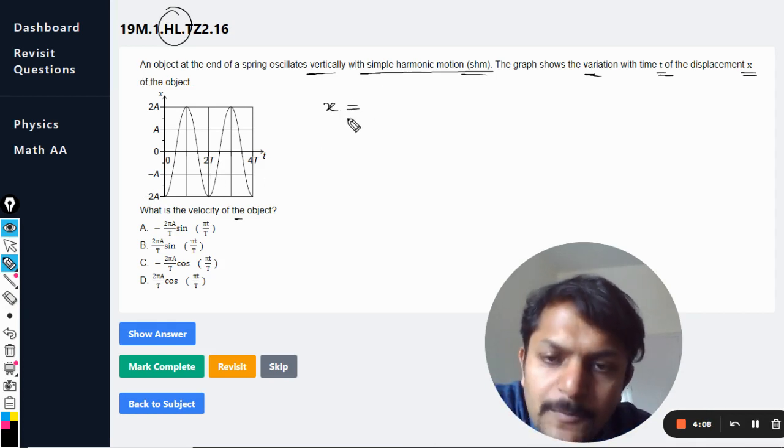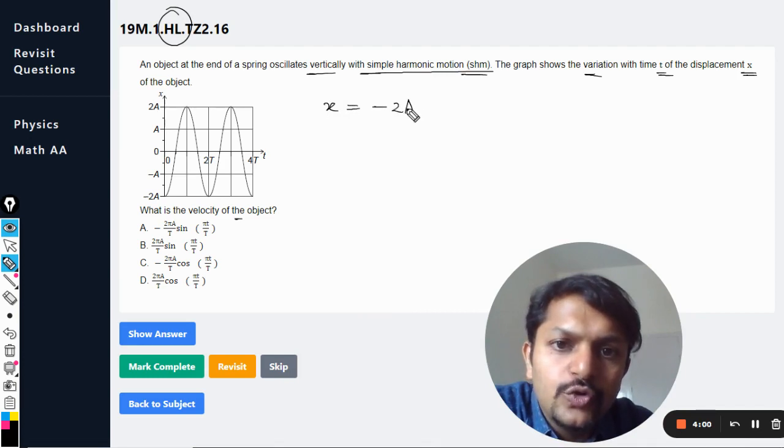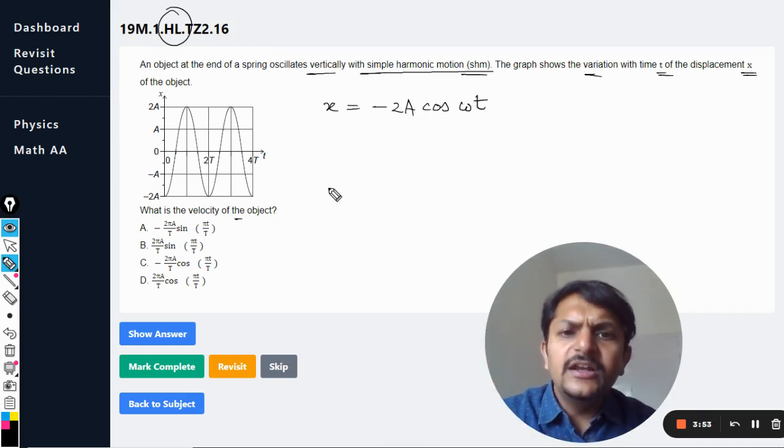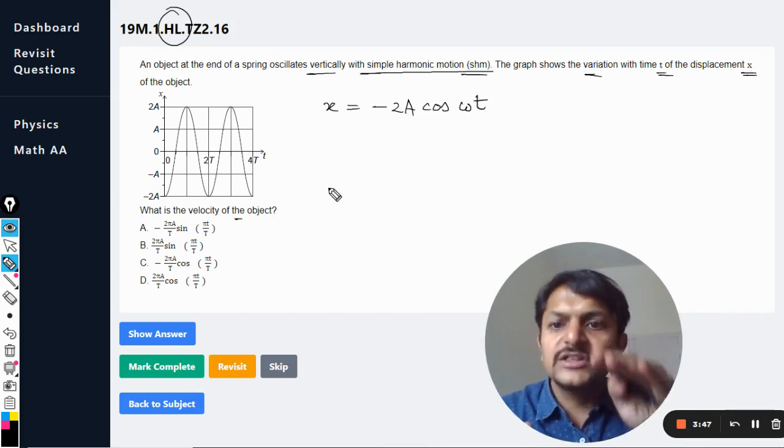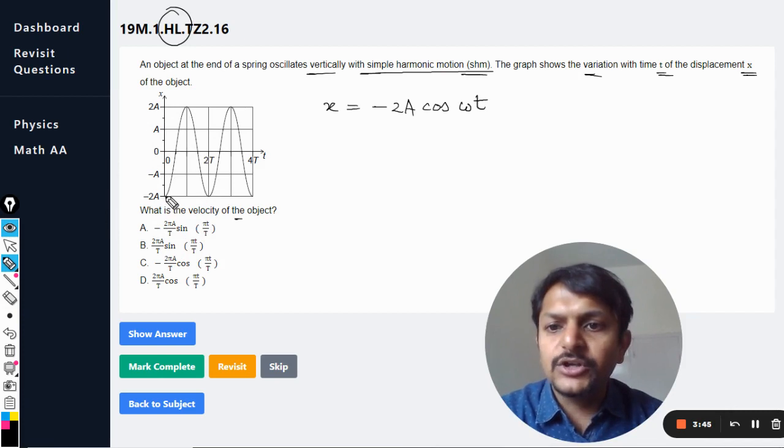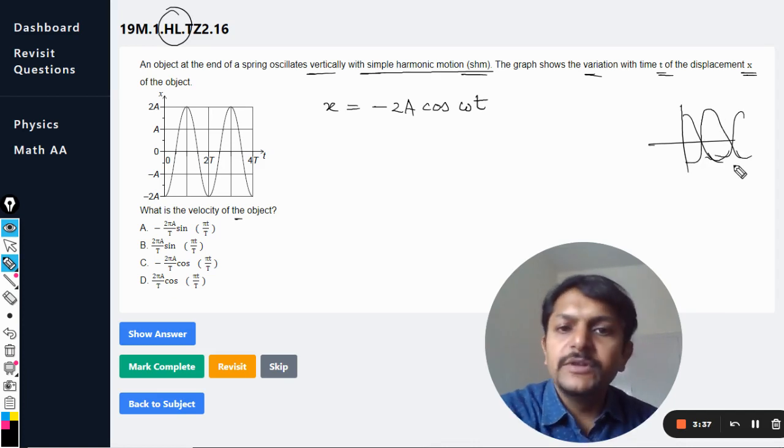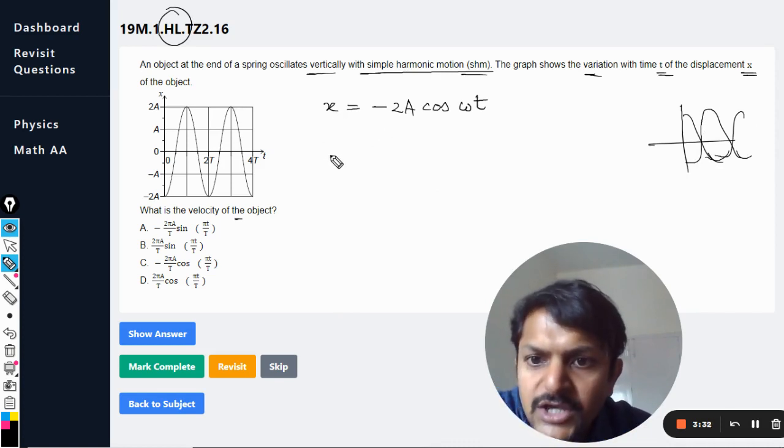So x is equal to the amplitude. The amplitude is 2A, and this variation is negative cosine, so it will be negative 2A cos ωt. So this is the displacement. Clearly the amplitude is 2A, and it is a negative cos θ variation that is visible here, because it is starting from the bottom and cos is starting from the top. This is cos, so this is negative cos, so it will be negative 2A cos ωt.